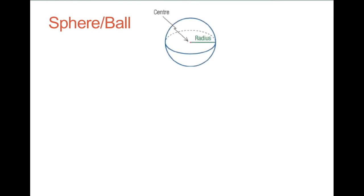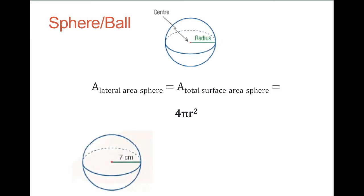For a sphere, the basic rule is the area of the lateral is the same as the area of the total, which is 4 pi r squared. Over here we have a ball with a radius of 7 centimeters. Plugging in 7 squared for r, we get that the area of this sphere or ball is approximately 615.75 centimeters squared.